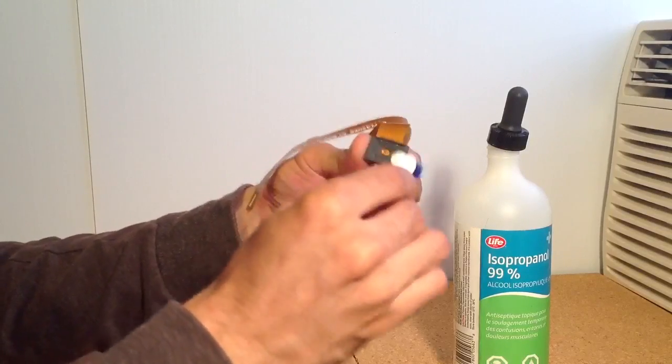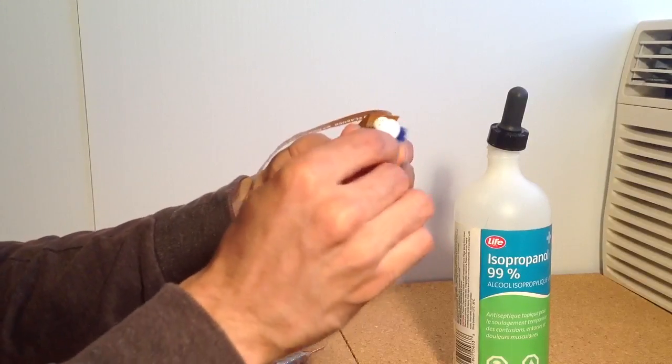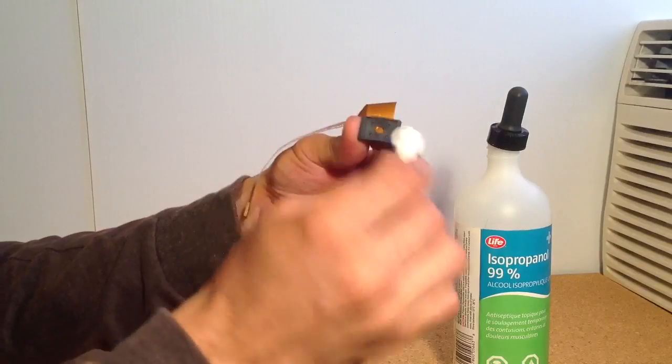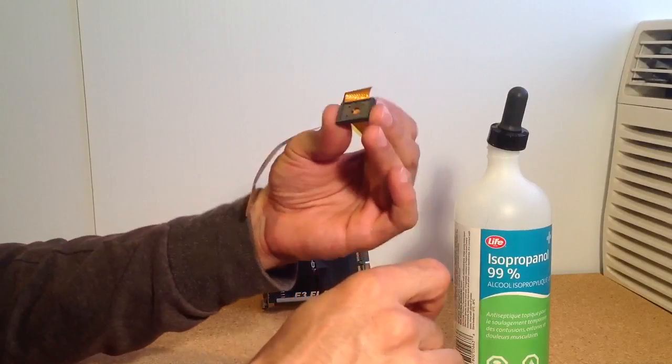Now remember that the alcohol is going to get in there and it doesn't evaporate if it's not exposed to the air. So let it sit for a good 10 minutes to make sure it's fully evaporated after you put some alcohol in there.